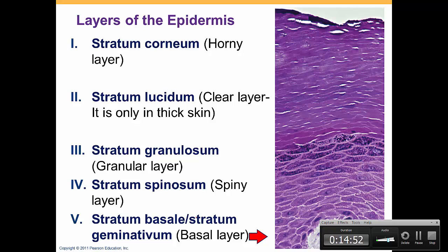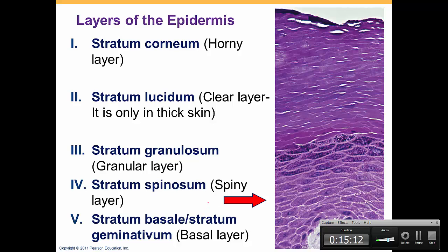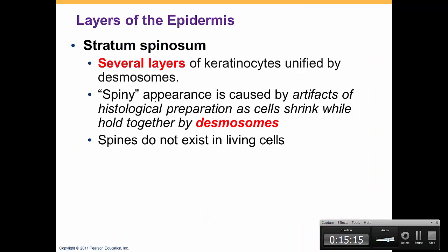Let's talk about these layers one by one. Starting with stratum basale or stratum germinativum — this is the deepest layer of the skin. This one contains the stem cells; it's mitotically active, so it divides, makes more cells, and these cells are pushed upwards. The layer after that is stratum spinosum — a few layers of keratinocytes characterized by desmosomes. The only layer characterized by desmosomes is stratum spinosum.